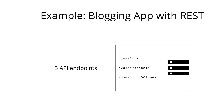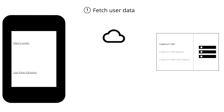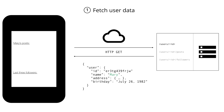Let's walk through the flow we would need inside the application to fetch all the data to display the user's profile screen. The first step would be to fetch the data about the particular user — we would hit the /users/ID endpoint to get information about the user identified by a particular ID. The server would respond with all the information it has currently stored about that user.